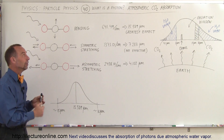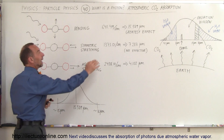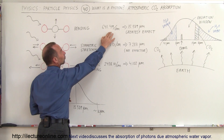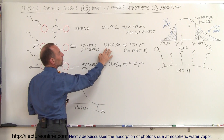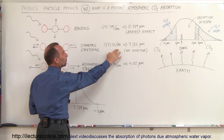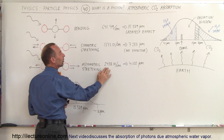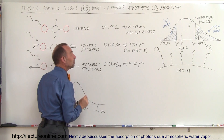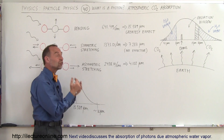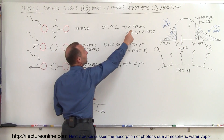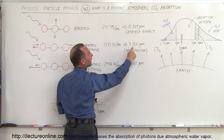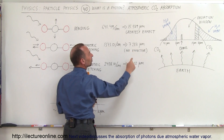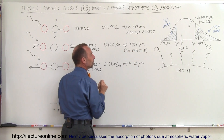The three frequencies are: 641.49 wavelengths per centimeter, 1373 wavelengths per centimeter, and 2438.1 wavelengths per centimeter, which translates to wavelengths of 15.589 micrometers, 7.283 micrometers, and 4.102 micrometers.